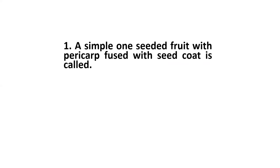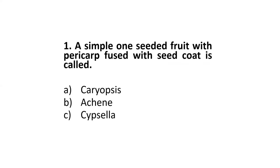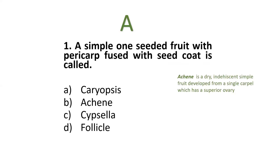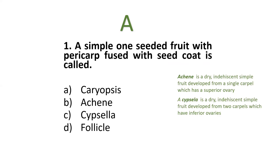The first statement: a seeded fruit with pericarp fused with seed coat is called — karyopsis, achene, cypsella, or follicle. The correct option is karyopsis. An achene is a dry indehiscent simple fruit that develops from a single carpel with a superior ovary. A cypsella is a dry indehiscent simple fruit developed from two carpels with inferior ovaries. A follicle is a type of dehiscent fruit formed from one carpel that opens only at one side.